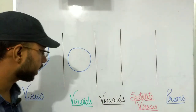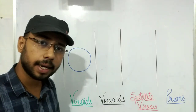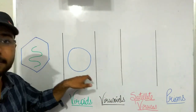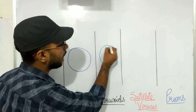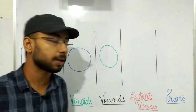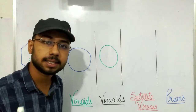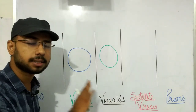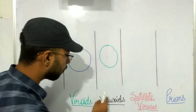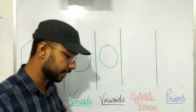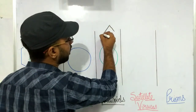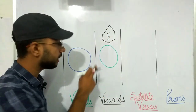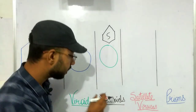Now, point number three — Virusoids. Viroids and virusoids are similar in that they are also circular RNAs. But what is the major difference? Viroids don't require any foreign support to replicate themselves, but virusoids require a helper virus to replicate. This is the key difference between viroids and virusoids — virusoids require another helper virus to replicate themselves.